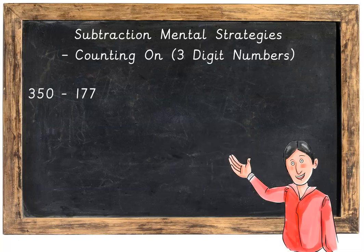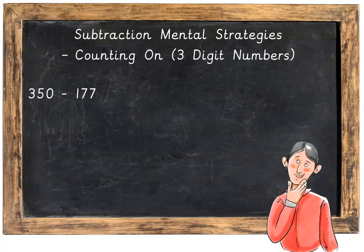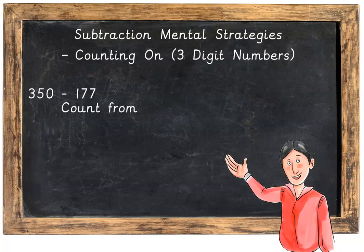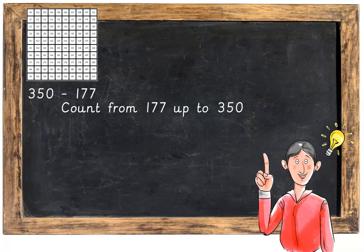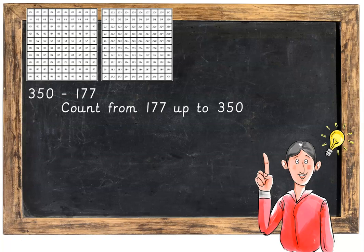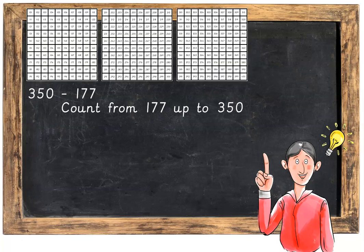Let's do our first example. Here we've got 350 take away 177. We're going to count from 177 up to 350. To help you, I'm going to give you 100 squares: up to 200, then 300, then 400.